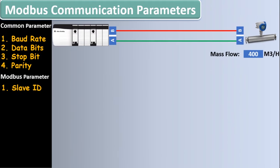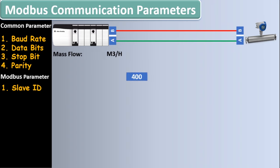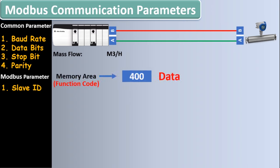All the communication parameters and slave ID along with the wiring are used to generate communication between two devices. Once the communication is generated, we are able to move data from one device to another. For example, suppose the real-time mass flow value on a flow meter is 400 cubic meters per hour and we want this data on our master device. Basically 400 is the data. This data exists on some memory area represented by the function code in Modbus parameters. Also, this data memory area has an address which we call a register. This register has some data type and data formatting — I will elaborate all these terms one by one.